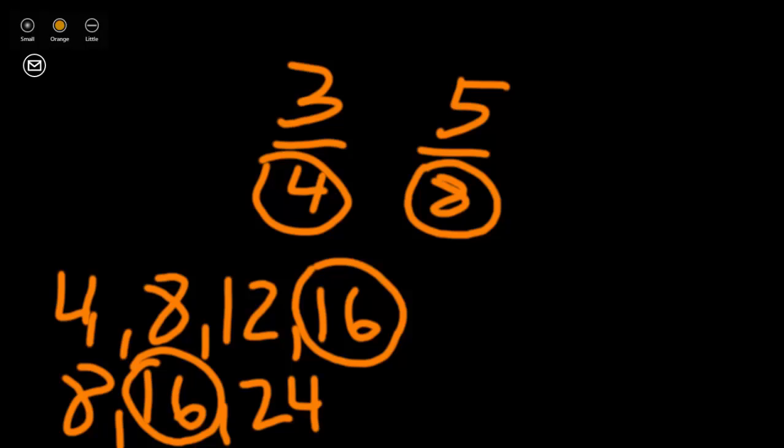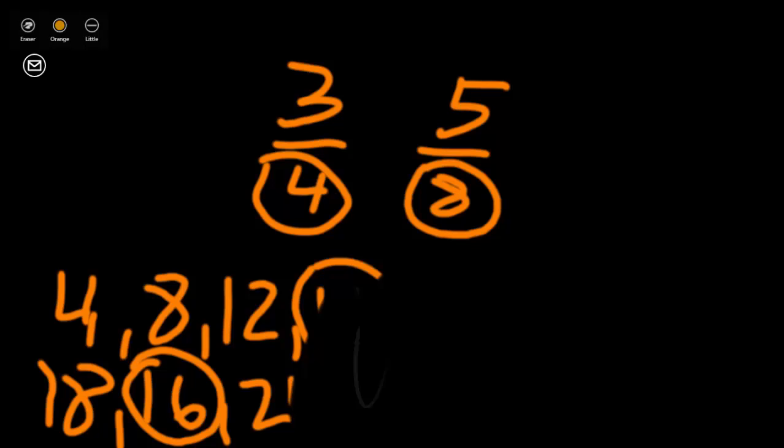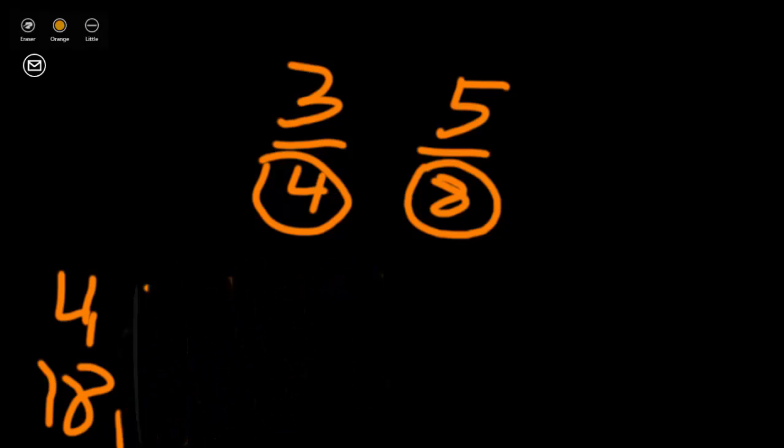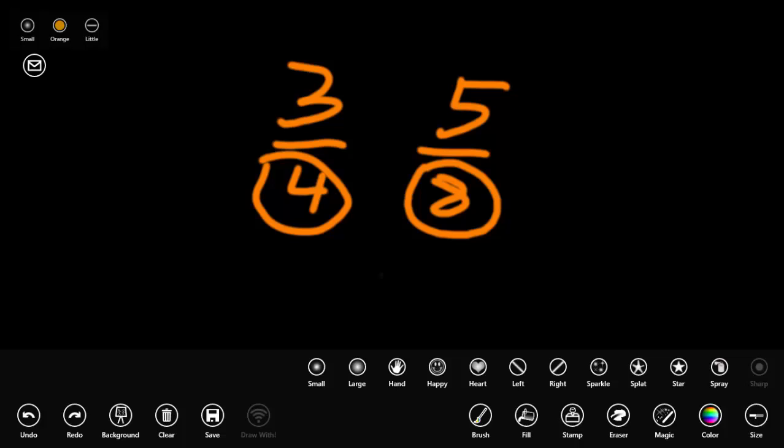We're going to use sixteen for our common denominator. Let me erase this work that we have here, so we'll have plenty of room to finish our work. Like we said, we're going to use sixteen, because it's a nice small multiple of four and eight. Sixteen is divisible by both eight and four.